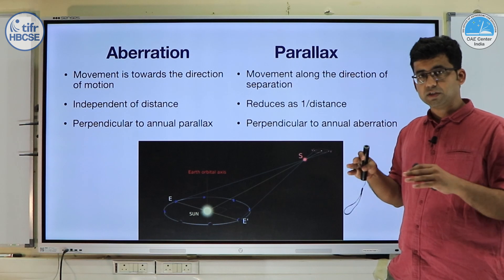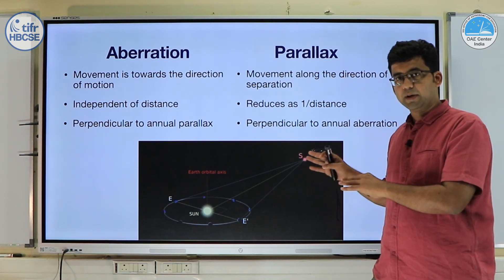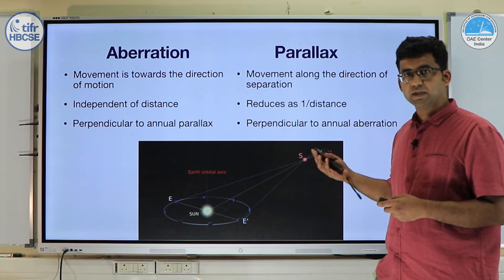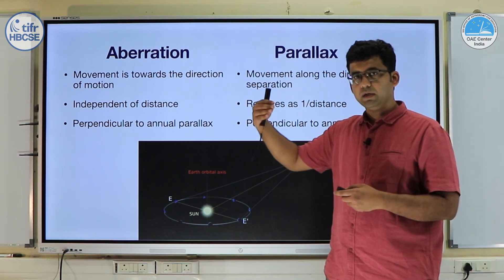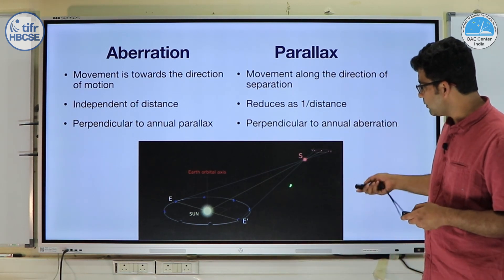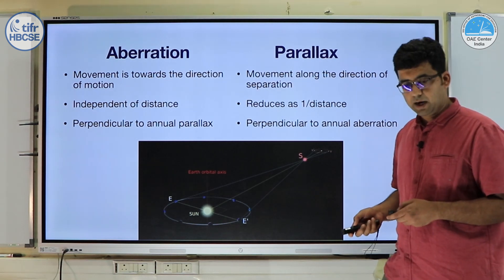Aberration is completely independent of distance. All stars, all planets, everything is affected in the same way by aberration. Whereas parallax reduces as one over the distance. As you go further and further away the effect of parallax becomes lower and lower, and we will talk a little bit more about this diagram to show how parallax and aberration are different.